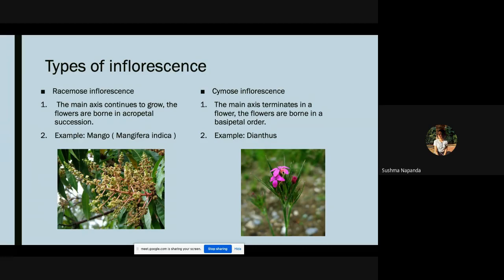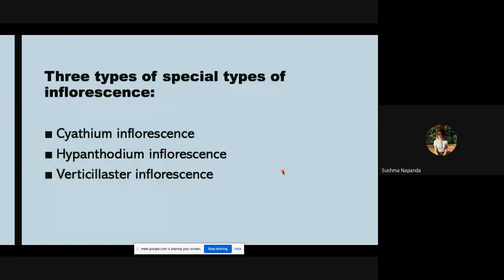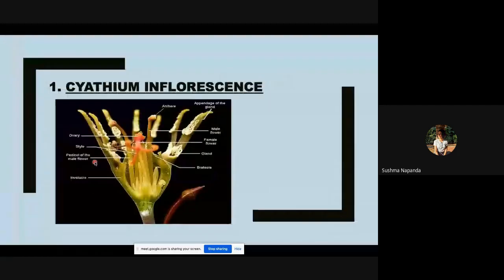Next, we will talk about the special types of inflorescence. There are three types: cyathium inflorescence, hypanthodium inflorescence, and verticillaster inflorescence. First, cyathium inflorescence. Here we have one female flower and around it we can see the male flowers.